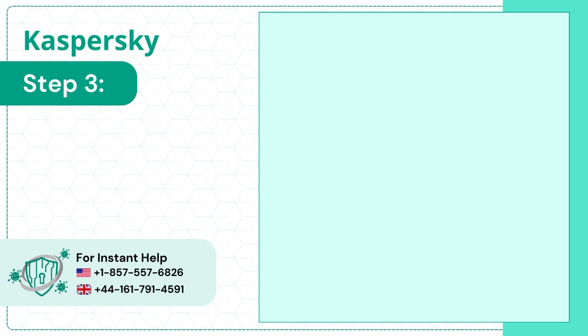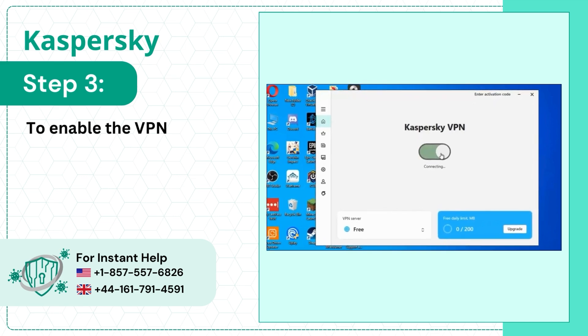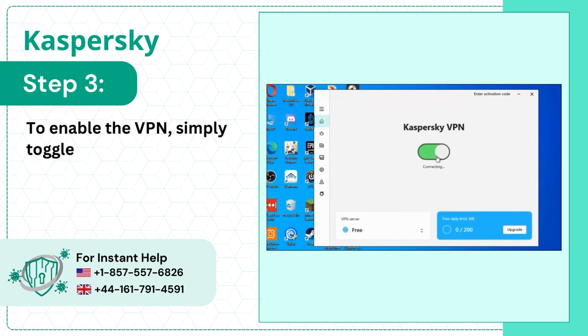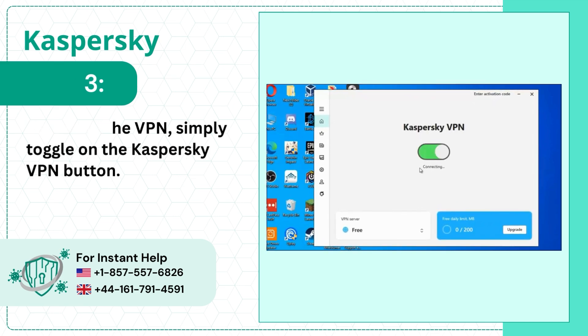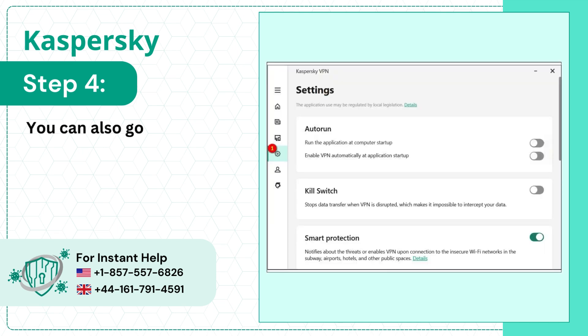Step 3: To enable the VPN, simply toggle on the Kaspersky VPN button. Step 4: You can also go to settings from the left menu.